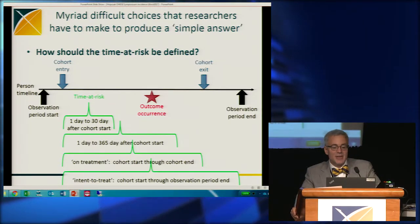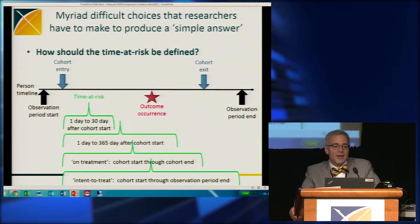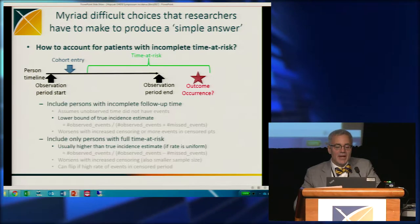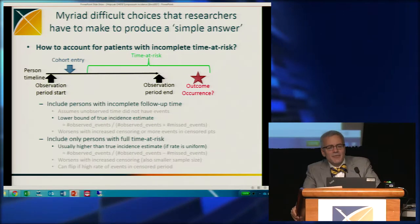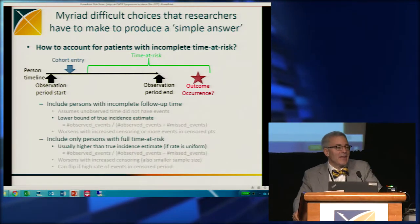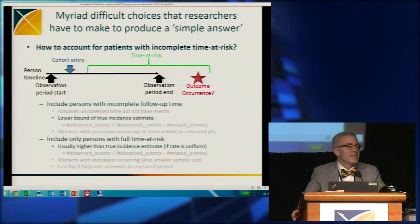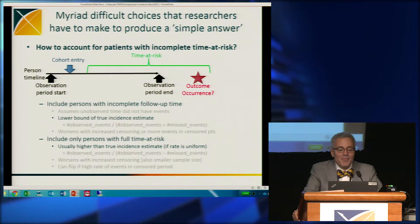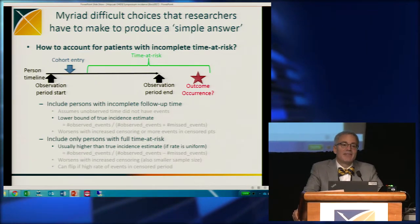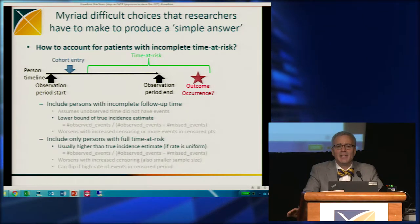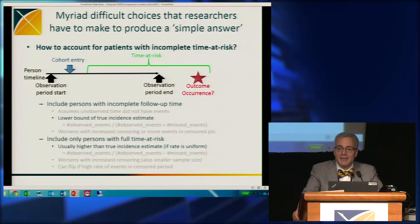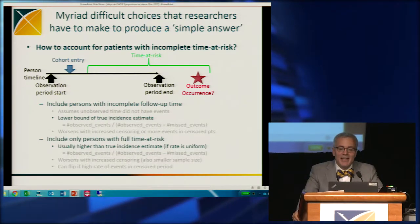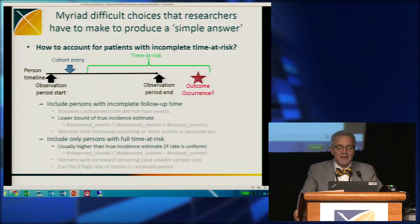Which time at risk should I use? 30 days shown first, a year is the second, while they're on the drug, or for as long as they're in my database once they start the drug, whether they stop it or not. And once we pick a time at risk, what about people who leave the cohort — that is, leave my database halfway through their time at risk? If time at risk is a year and they leave the database at six months, then I don't know what happens for the last six months. Should I count everyone who entered the cohort? If I do, I'm guaranteed to do an underestimate — I have a lower bound on the incidence rate. If I only include people that make it all the way through, then I likely have an upper bound. If the rate of side effects is roughly constant, then it will be an upper bound, and the answer will be about halfway in between if the risk is constant.